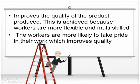Overall, this approach improves the quality of the product produced. This is achieved because workers are more flexible and multi-skilled, which is particularly important where non-standard orders are concerned. The fact that cell production completes the full job means workers are more likely to take pride in their work, which improves quality.